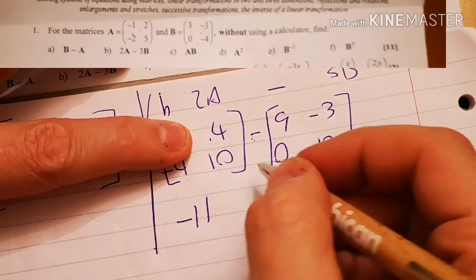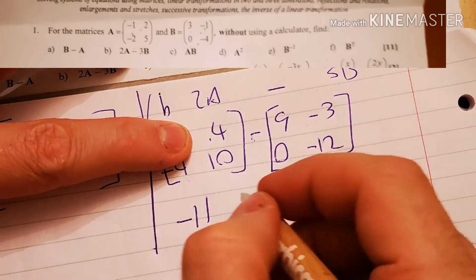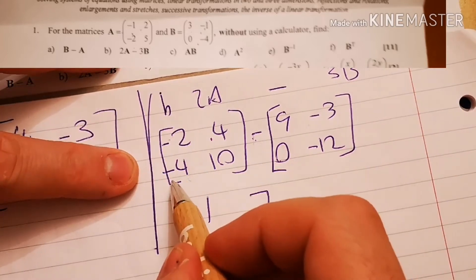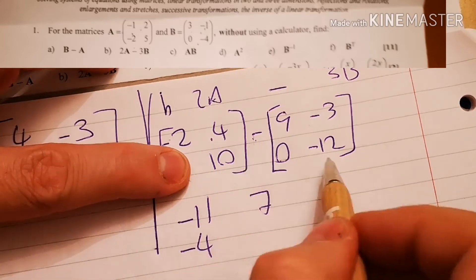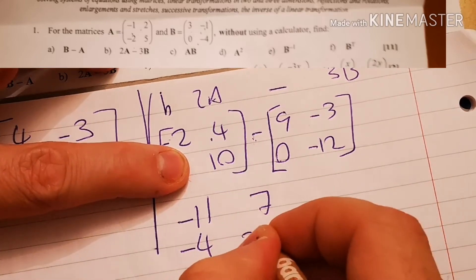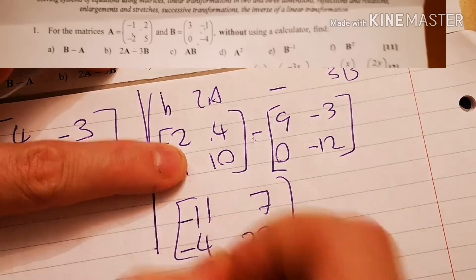And now we just subtract them. So minus 2 minus minus 9 is negative 11. 4 minus minus 3 is 7, 4 plus 3, which is 4 plus 6, 7. And minus 4 minus 0, which leaves it as minus 4. 10 minus minus 12, which is 22. Okay, good.